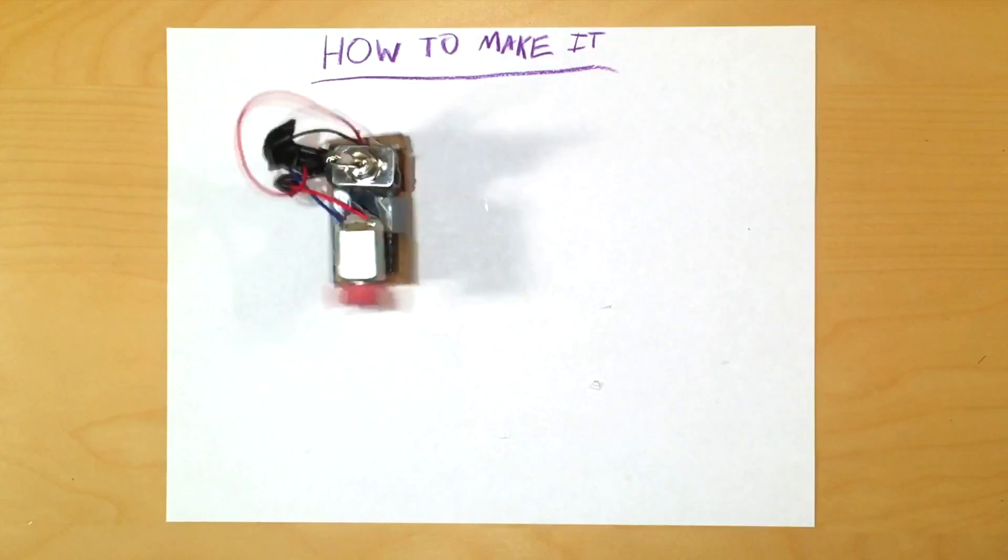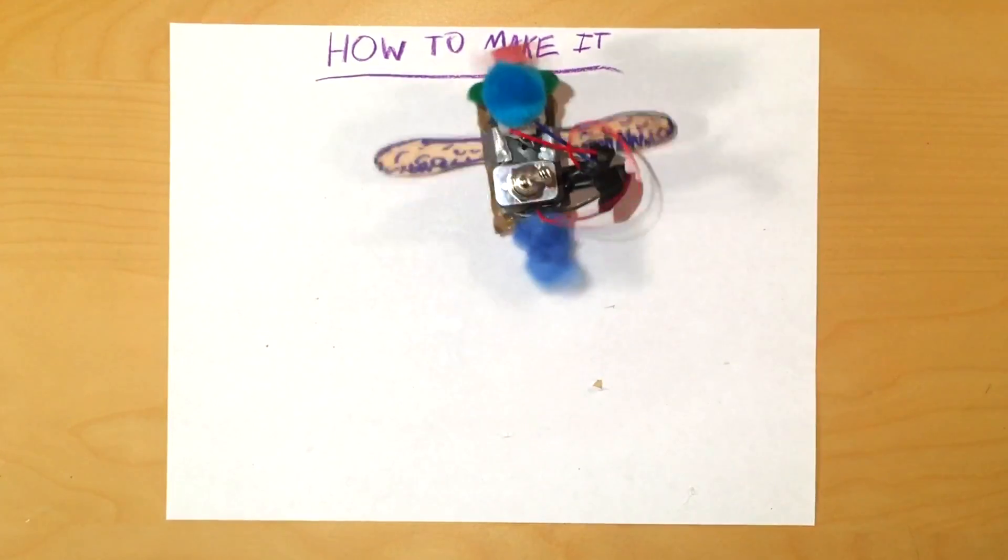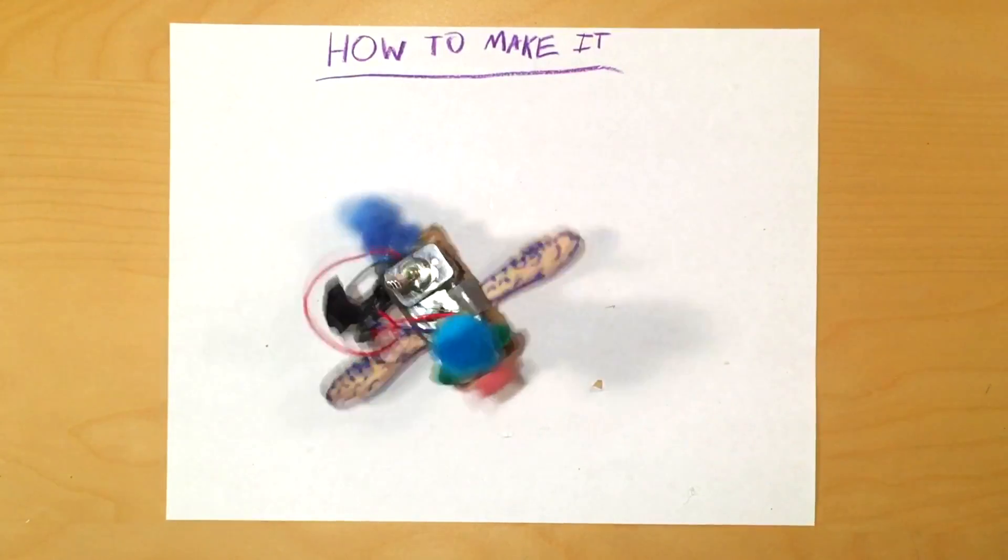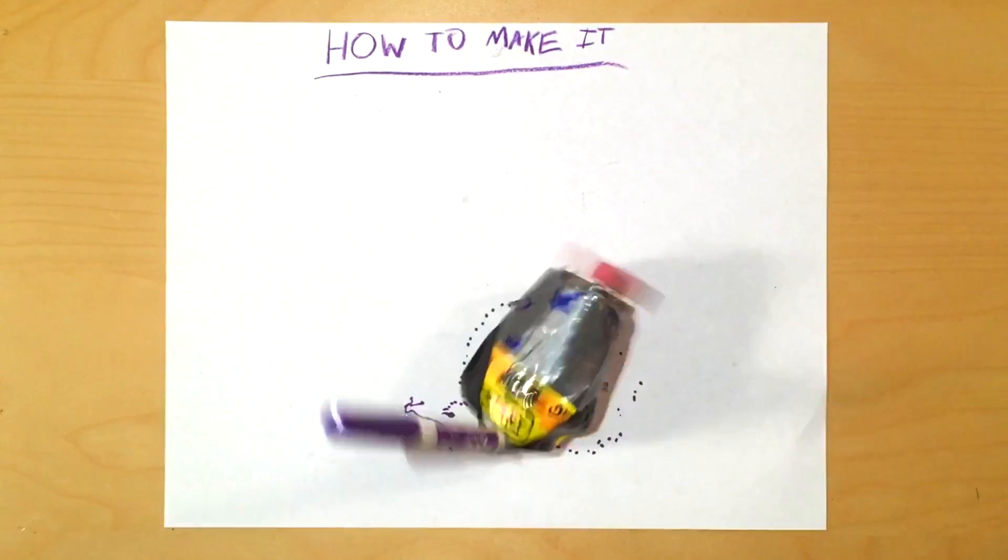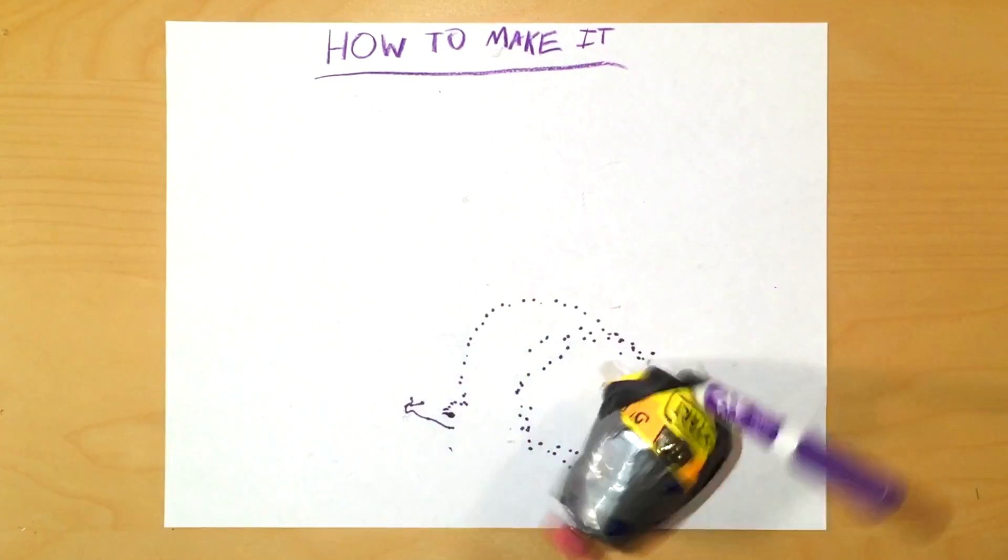If you're not satisfied with the appearance of the Jitterbot, you can decorate it any way you want. I'd recommend experimenting with the type and position of the legs, position of the hole on the eraser, and the type of imbalanced weight that you use.